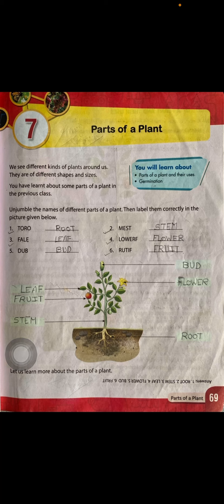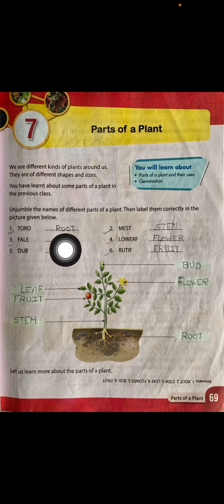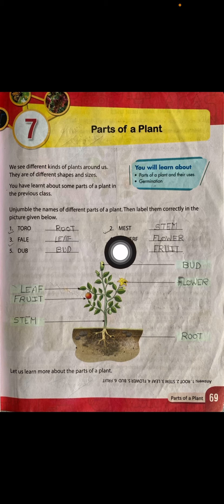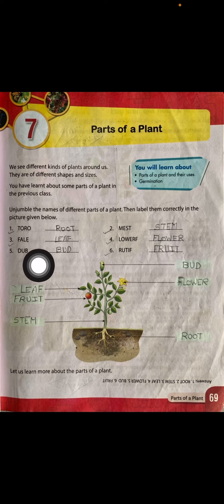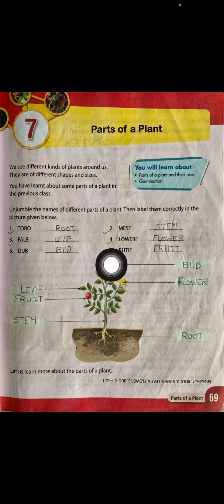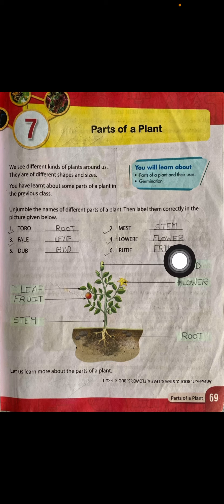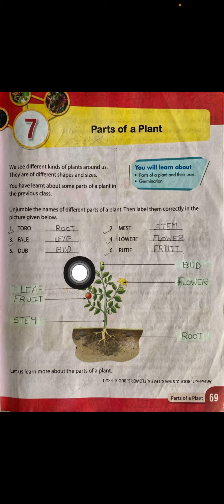It's a very easy activity. Let's do it. First: T-R-O-T-O-R-O — the answer is Root. Root is a part of the plant. Second is Stem — S-T-E-M. Third one is Leaf — L-E-A-F. Fourth one is Flower — F-L-O-W-E-R. Fifth one is Bud — B-U-D. And the last one is Fruit — F-R-U-I-T.